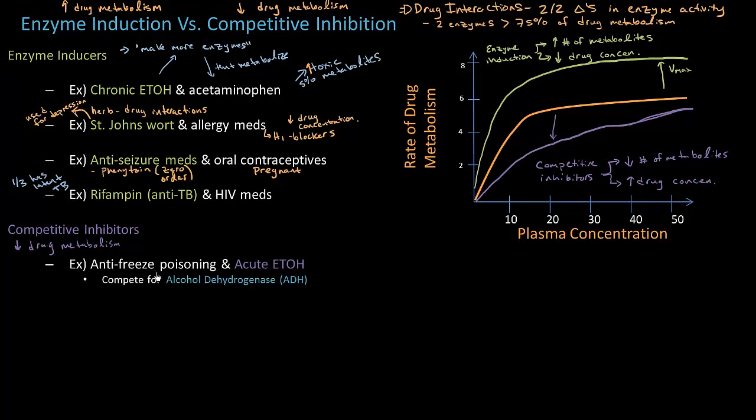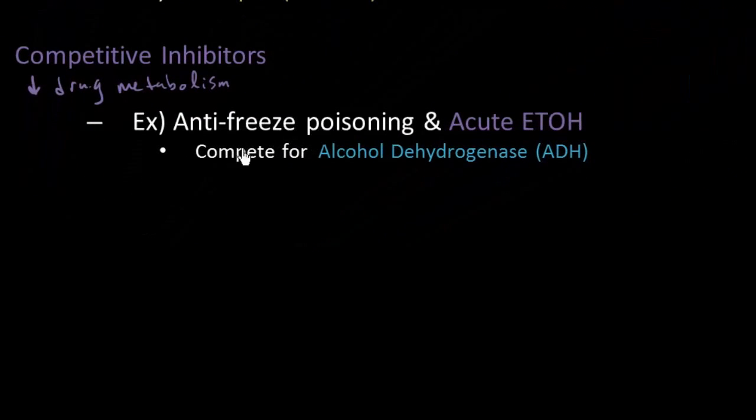The example that I like the most with competitive inhibitors is antifreeze poisoning and treating that poisoning with alcohol. And I wrote acute here to differentiate it from chronic alcohol use which was actually an enzyme inducer.